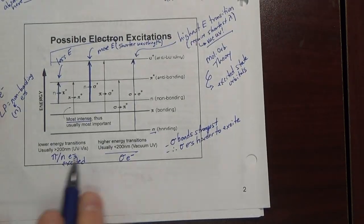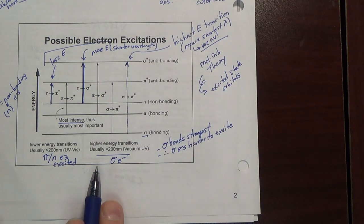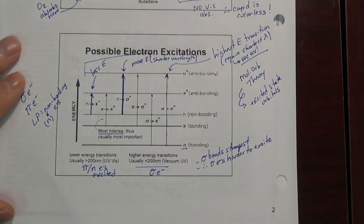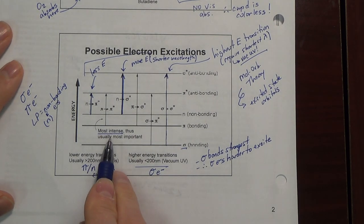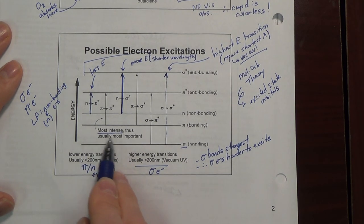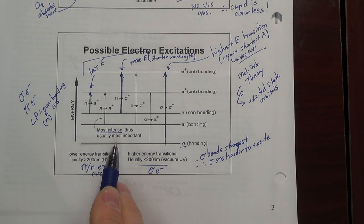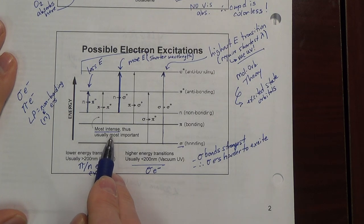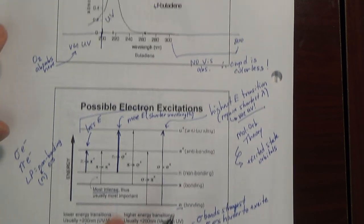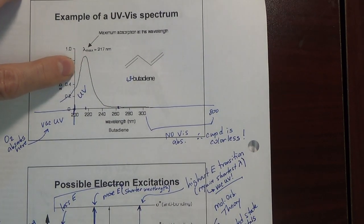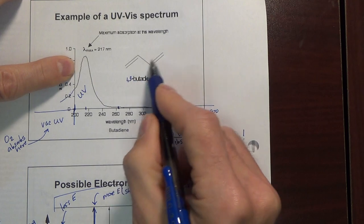Now there's a difference between position — that is wavelength — versus intensity at that wavelength. The pi to pi star tends to be an intense absorbance peak. And this butadiene spectrum is probably a pi to pi star transition, since this molecule does have pi electrons.